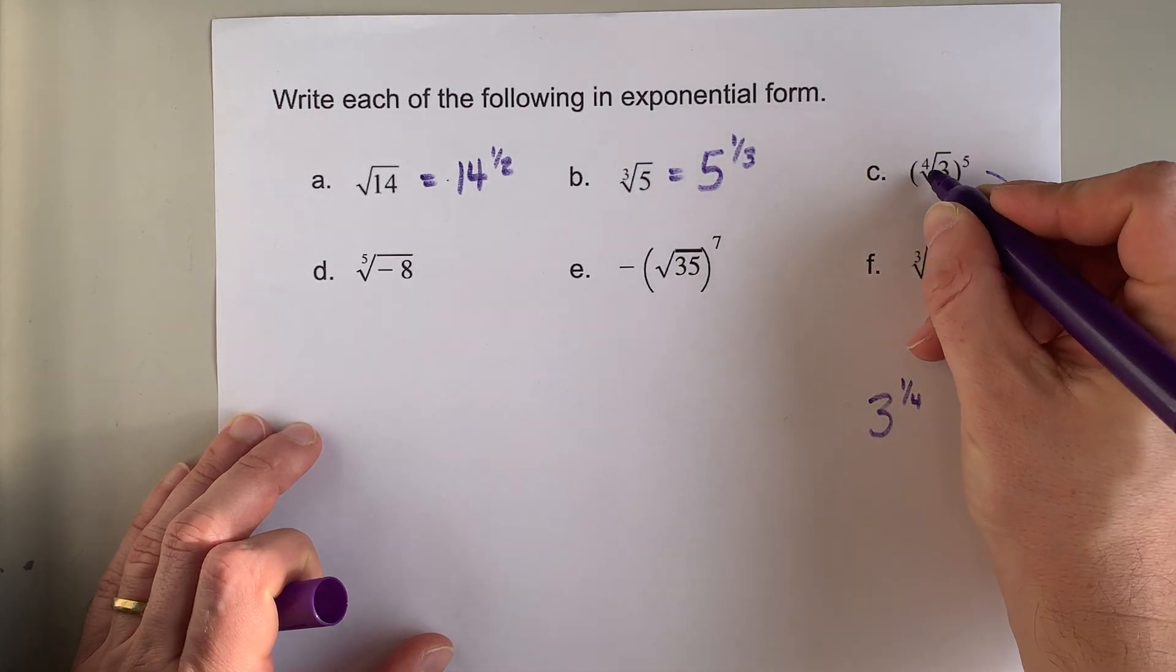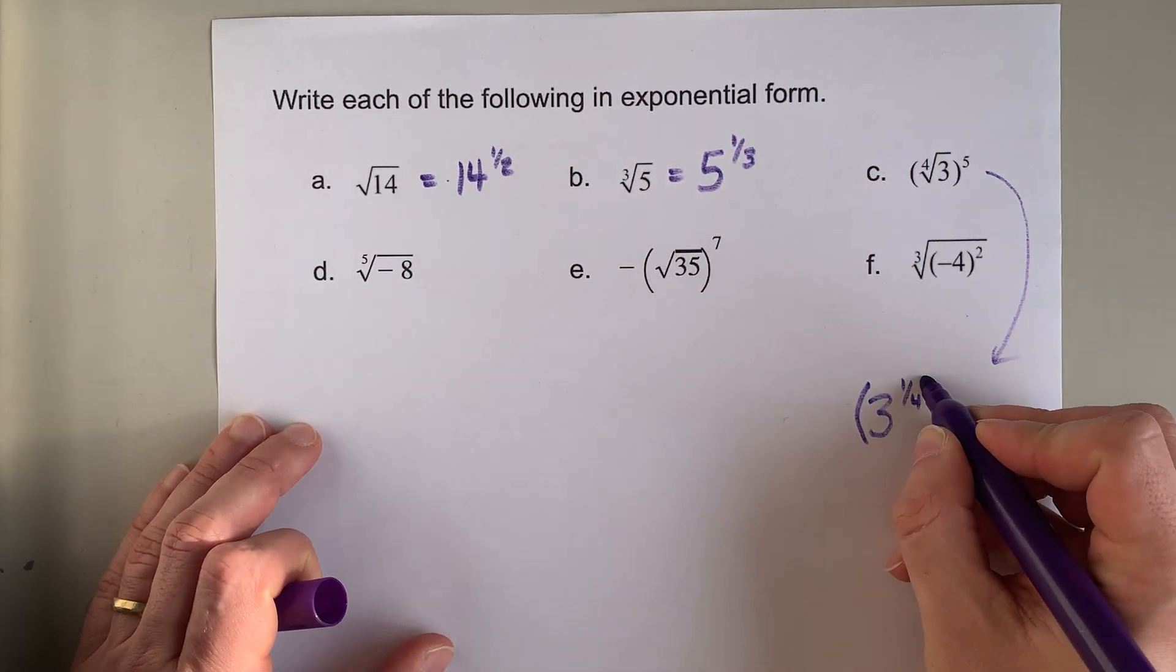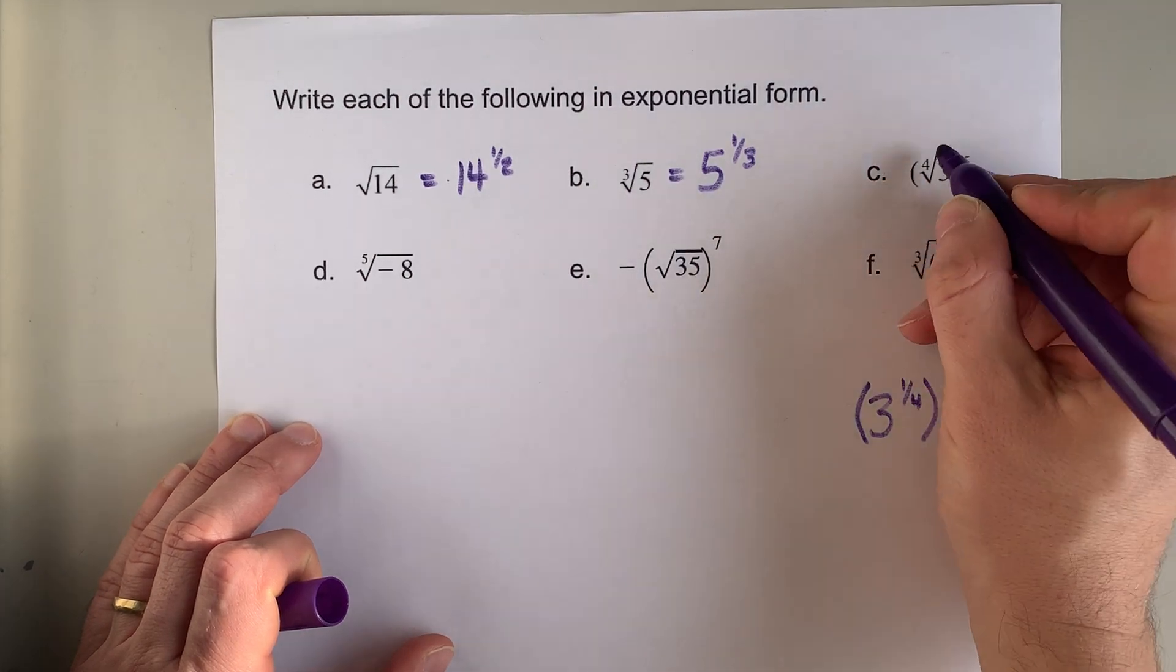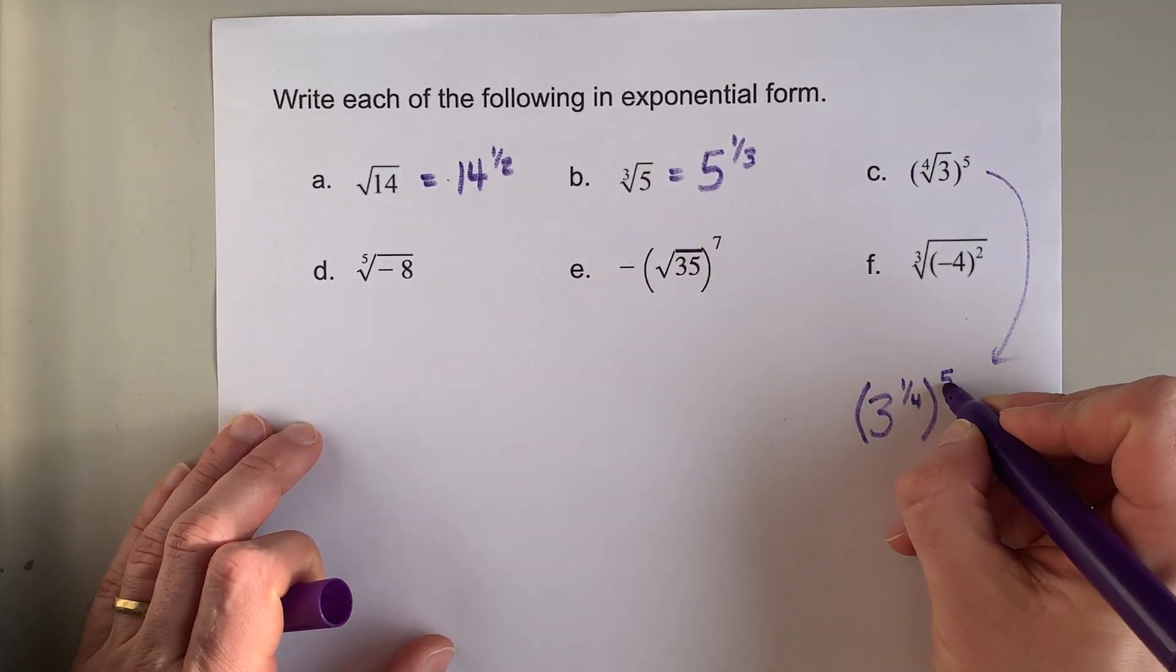The fourth root of three is three to the power of a quarter, but that whole thing has been raised to the power of five here.